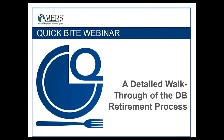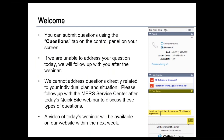At the conclusion of today's webinar, you'll be directed to a quick six-question survey. Please take a moment to fill that out so we can use your feedback to improve future webinars. Throughout the presentation, you can submit questions by clicking on the question mark at the top of your screen. For personal questions related to your plan, contact our Service Center at 1-800-767-6377. If we're unable to address any questions today, we will follow up with you.